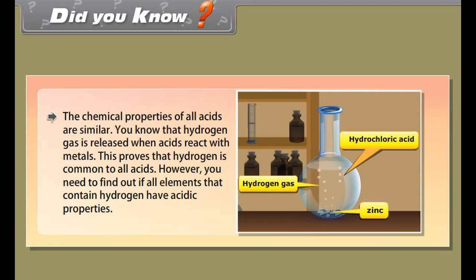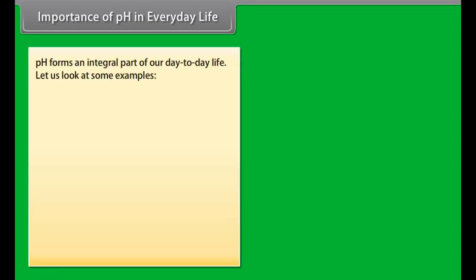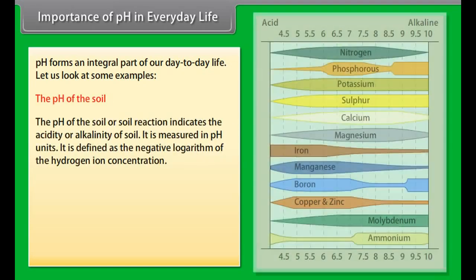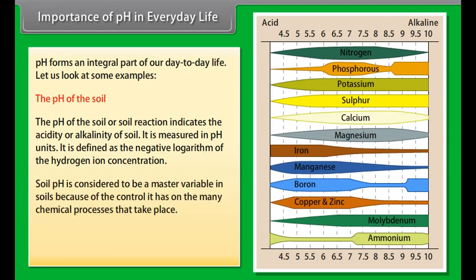Strength of acids and bases. You need to use a universal indicator to find the amounts of ions present in a solution or to find out how strong an acid or base is. The universal indicator is a mixture of several indicators. It shows different colors at different concentrations of hydrogen ions in a solution. A pH scale is a scale of measuring hydrogen ion concentration in a solution. You can measure pH from 0, which represents very acidic, to 14, which represents very alkaline. Neutral elements have a pH value of 7.